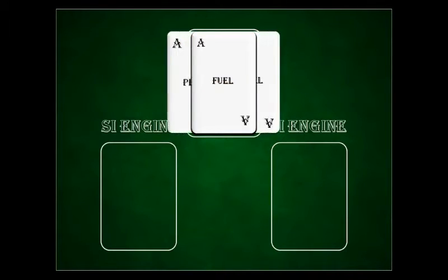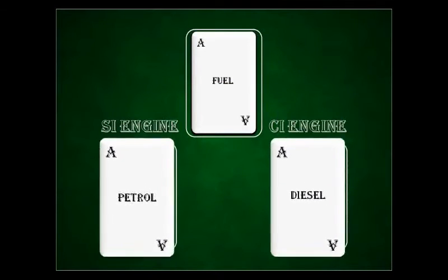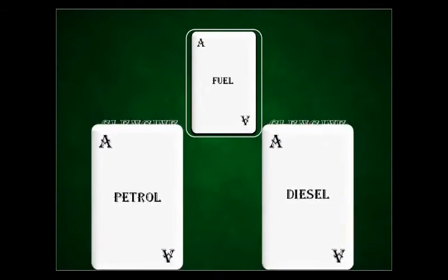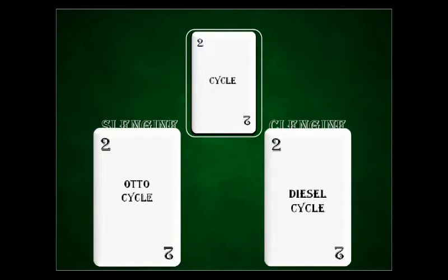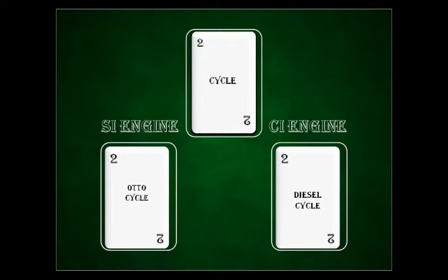First is fuel used. In SI engines, petrol or gasoline is used as fuel, while in compressed ignition engines, diesel is used as fuel. Next is the type of cycle used. In SI engines, the Otto cycle is used, in which heat addition or fuel combustion occurs at constant volume. The basis of working of CI engines is the diesel cycle, in which heat addition or fuel combustion occurs at constant pressure.